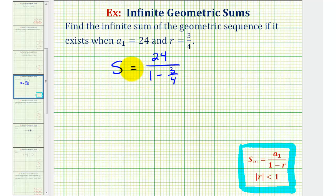So it is pretty amazing that we can find an infinite sum with a formula that's less involved than the formula for a partial sum of a geometric series. Here we would have 24 divided by one minus three-fourths.